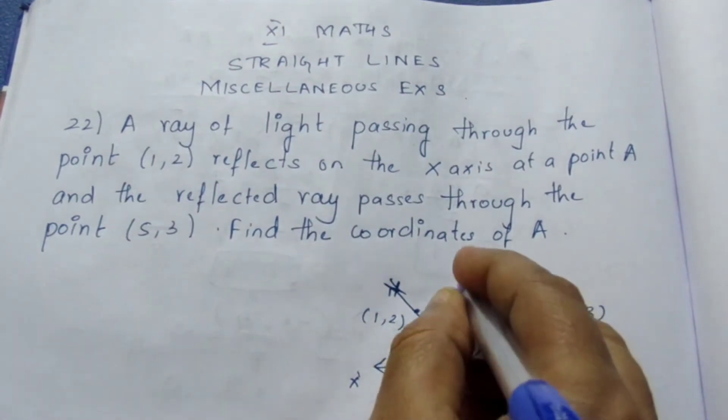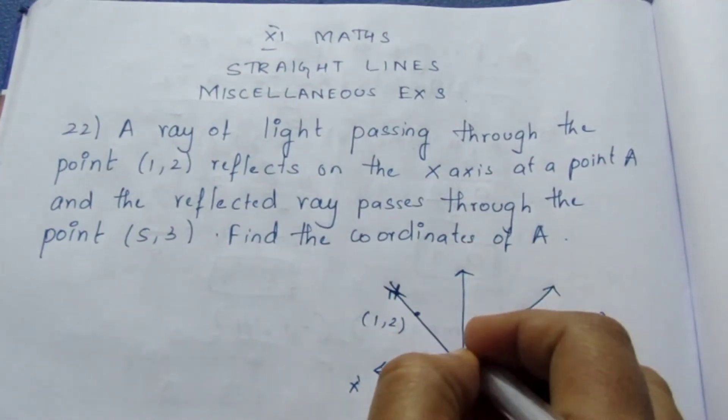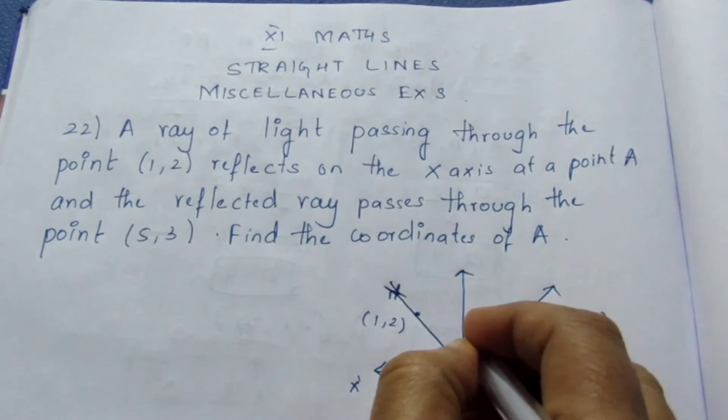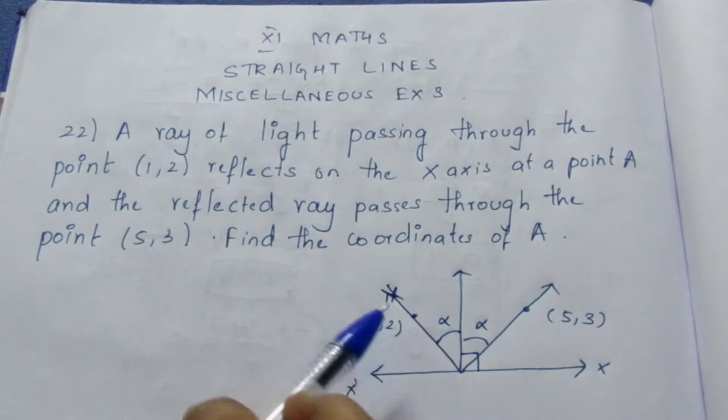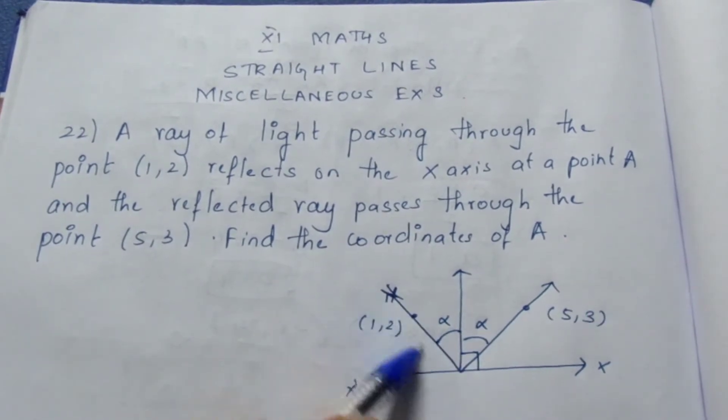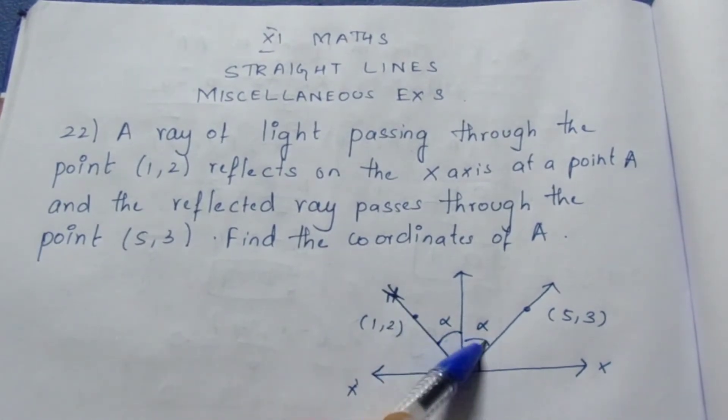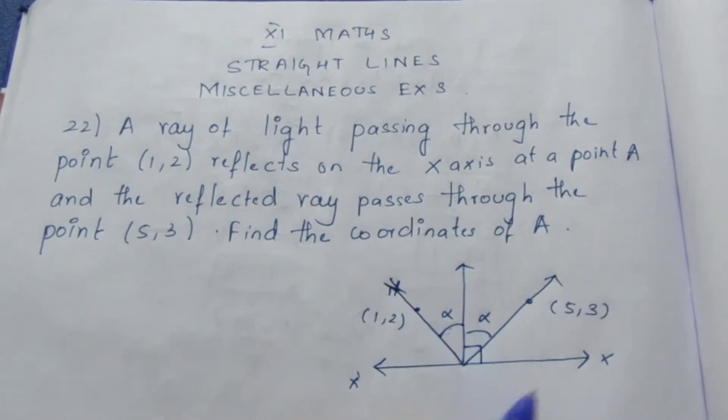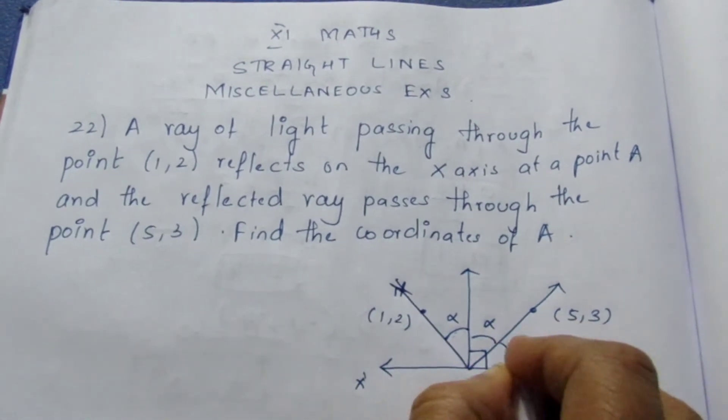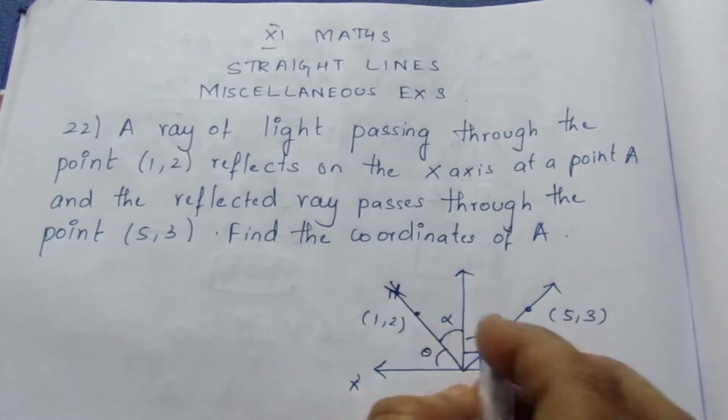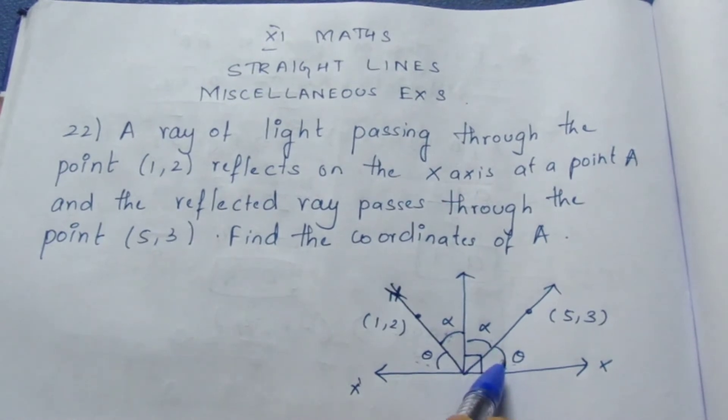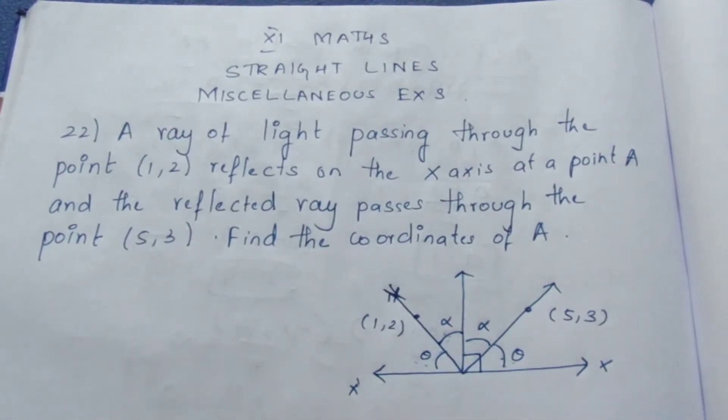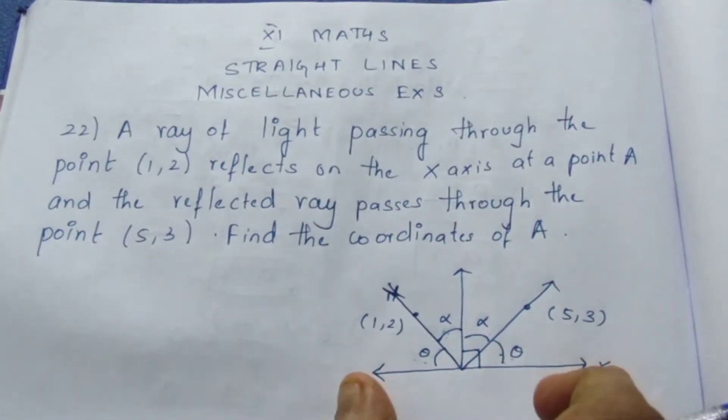Now let me draw a 90 degree line. This will be 90 degrees. I am taking this to be alpha. Even this will be alpha. You know that in physics we have learned that the angle of incidence is equal to angle of reflection. If I take this to be theta, even this will be theta because here it is 90 degrees. If these two are equal, then this will be equal because of this 90 degrees. This will be 90 minus theta.